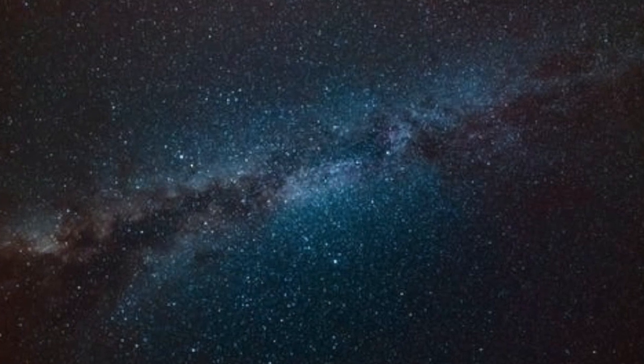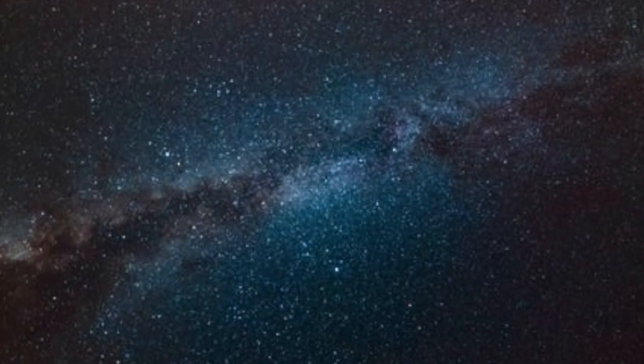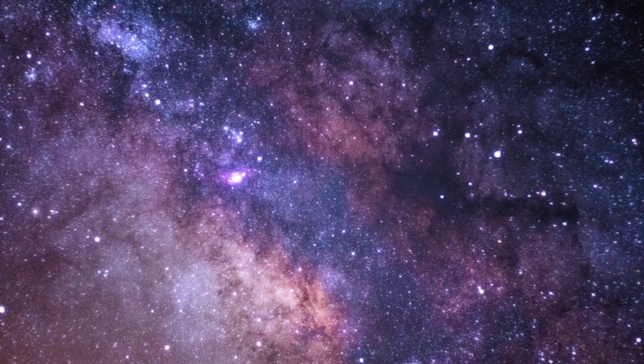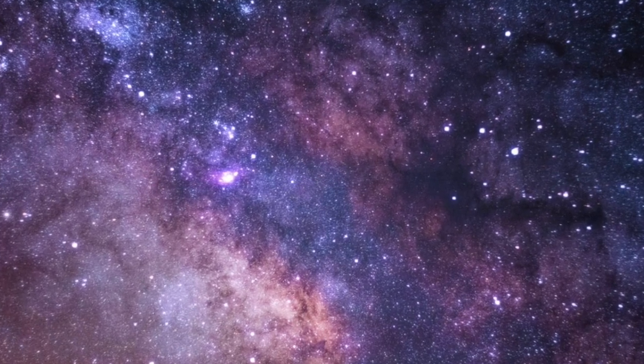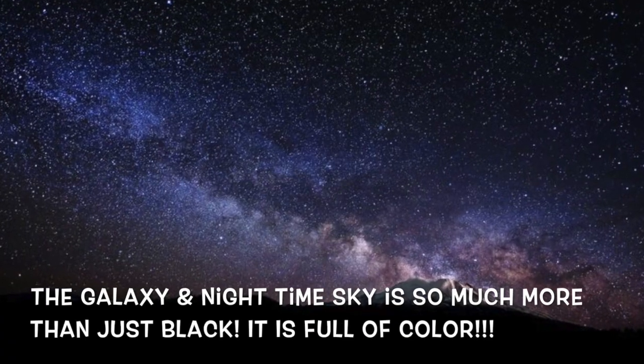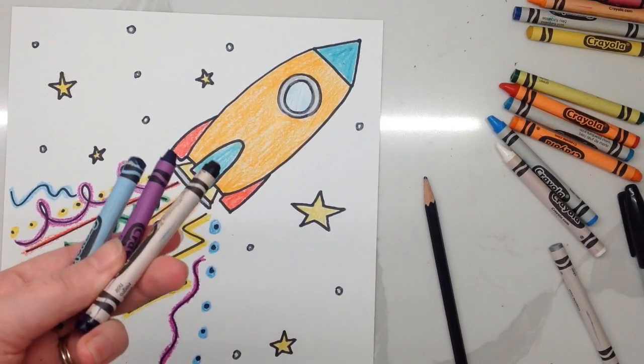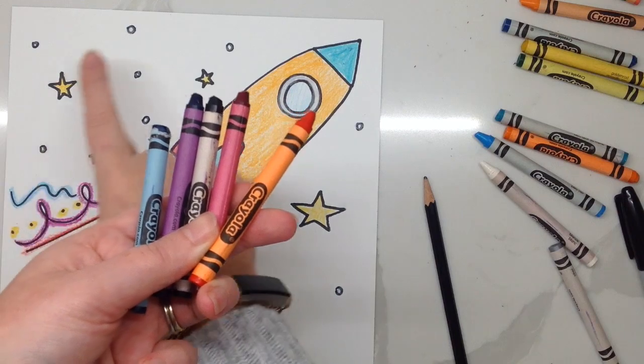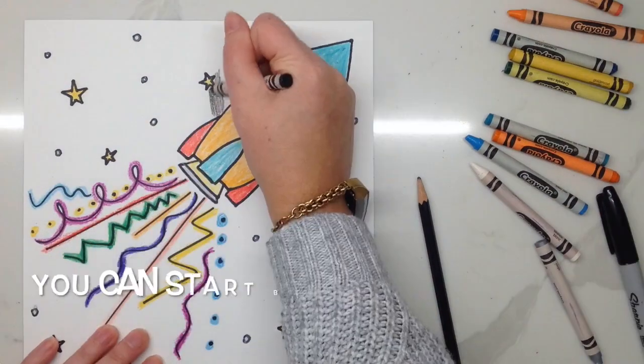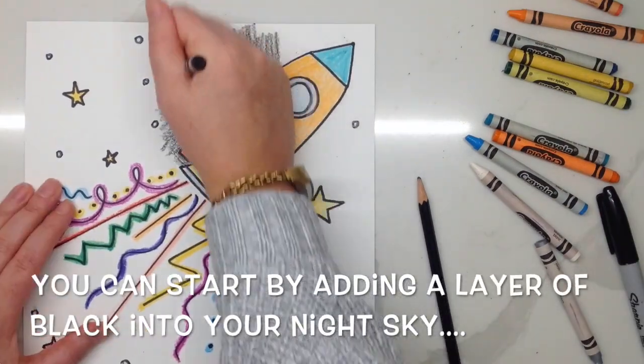Now that we've added stars, we can create a galaxy background and make it look like outer space. Usually people think of just black, but truly outer space is full of color. The galaxy has so many different colors in the nighttime sky. To keep it simple, you can always use black, purple, and blue. Or you can get a little bit more creative and start adding in reds and pinks.